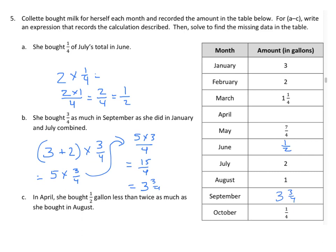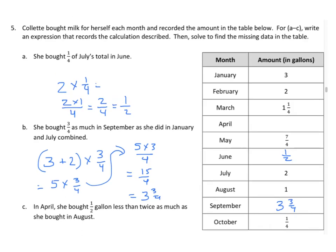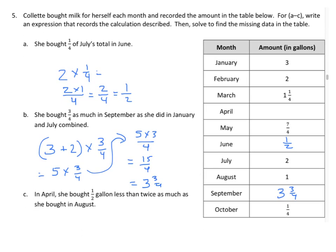Finally, in April she bought one half gallon less than twice as much as she bought in August. August was 1 gallon, so we have 1 times 2 minus one half, which gives 2 minus one half, equals 1 and one half.